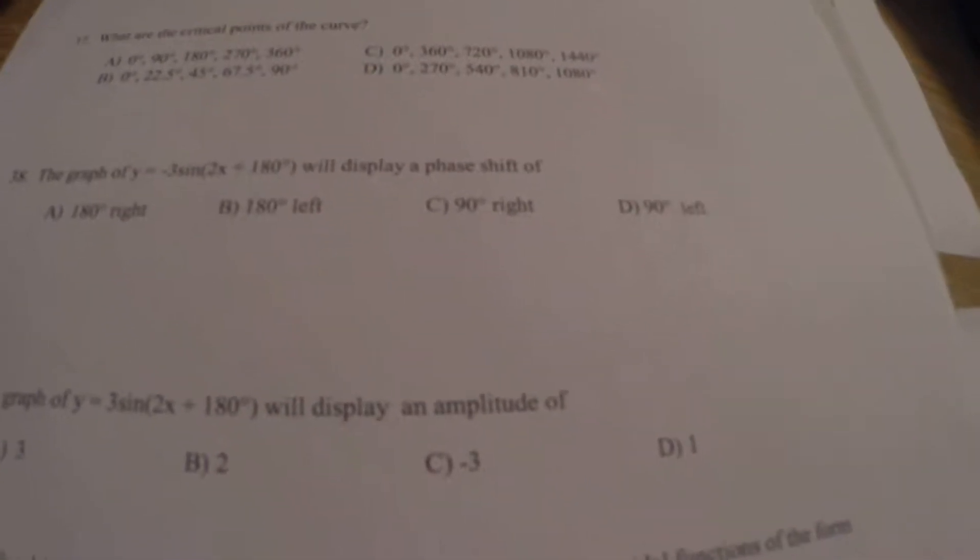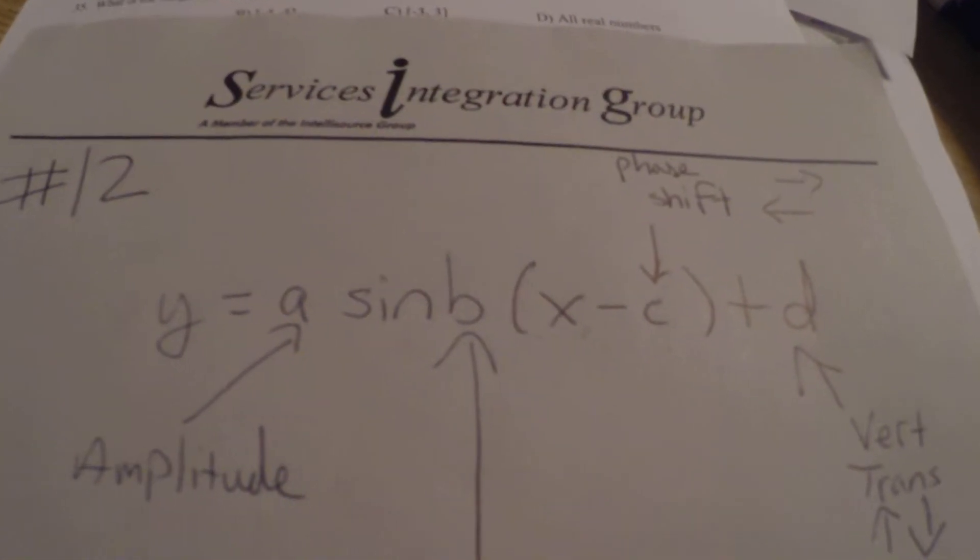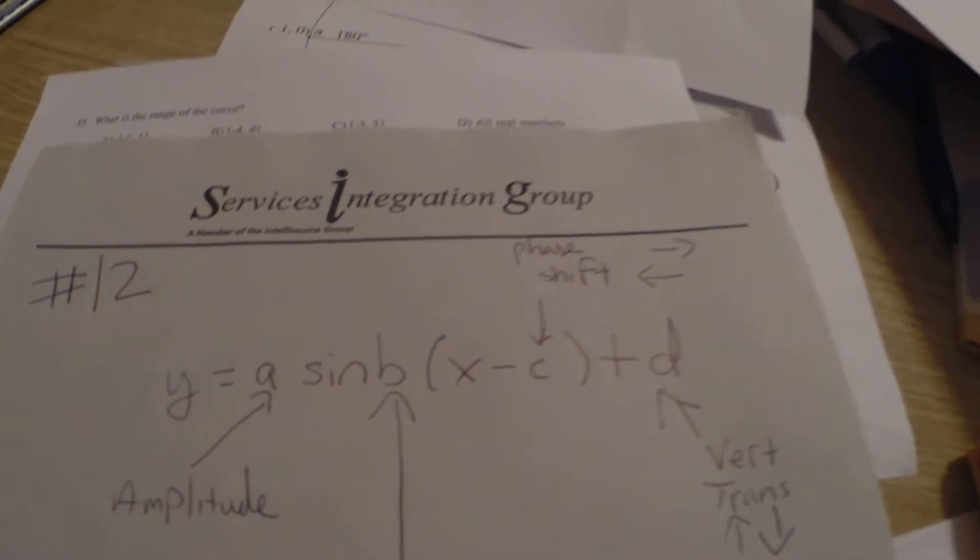Okay, so again, if we look back at our old equation, we're going to see that we have to factor out the b. The b has to be factored out.